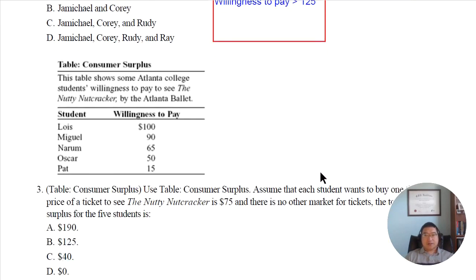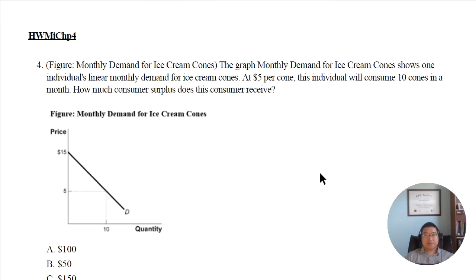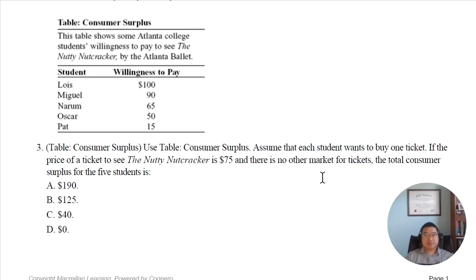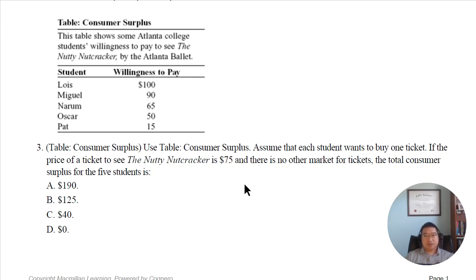Now let's move to question three. The table 'Consumer Surplus' — assume that each student wants to buy one ticket. If the price of a ticket to see the Nutty Nutcrackers is $75 and there is no other market for tickets...